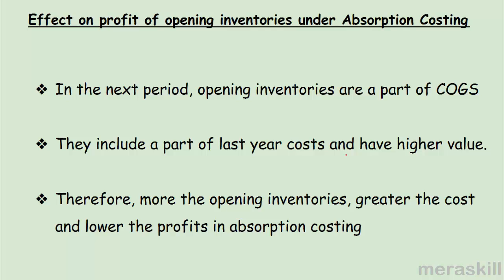In the next period, opening inventories — which include part of last year's cost and therefore have a higher value under absorption costing — become part of the cost of goods sold. So the cost goes up. If cost goes up, profit comes down. Therefore, the greater the opening inventories, the greater the cost and the lower the profits under absorption costing.